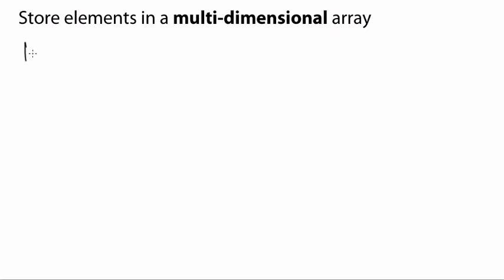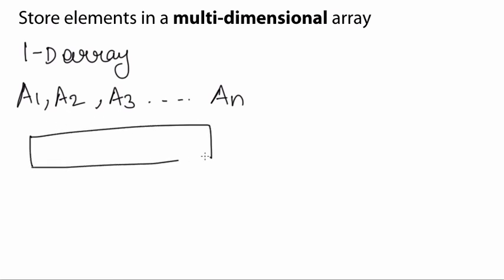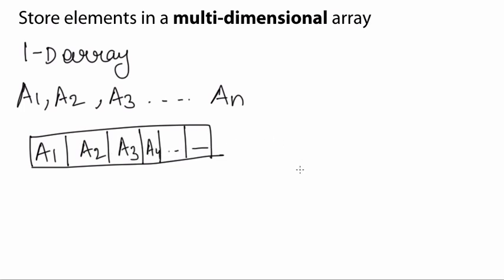In this tutorial we are going to learn about how to store elements in a multidimensional array. Before beginning this, let's say I have a one dimensional array having elements like a1, a2, a3 up till an. Now, this is stored in my memory space as n subdivisions, and my elements are stored like this and so on.